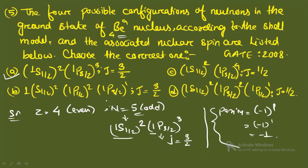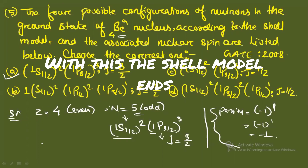So this is how you calculate the correct spin parity just by looking at the number of protons and the number of neutrons, and according to the shell model you can determine the spin and parity. That's all for this video. Thank you so much, have a good day.